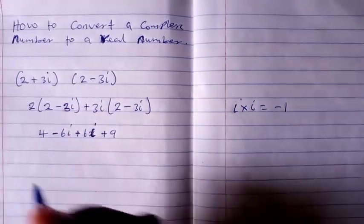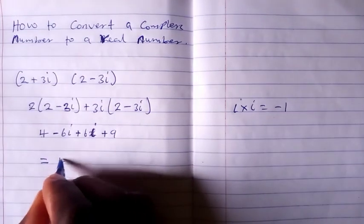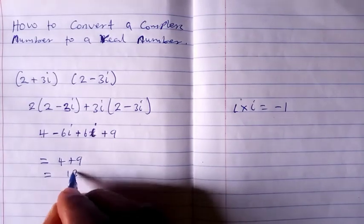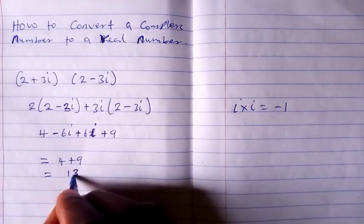Plus 6i and minus 6i will give you 0. So this will be equal to 4 plus 9, which is equal to 13, which is a real number.